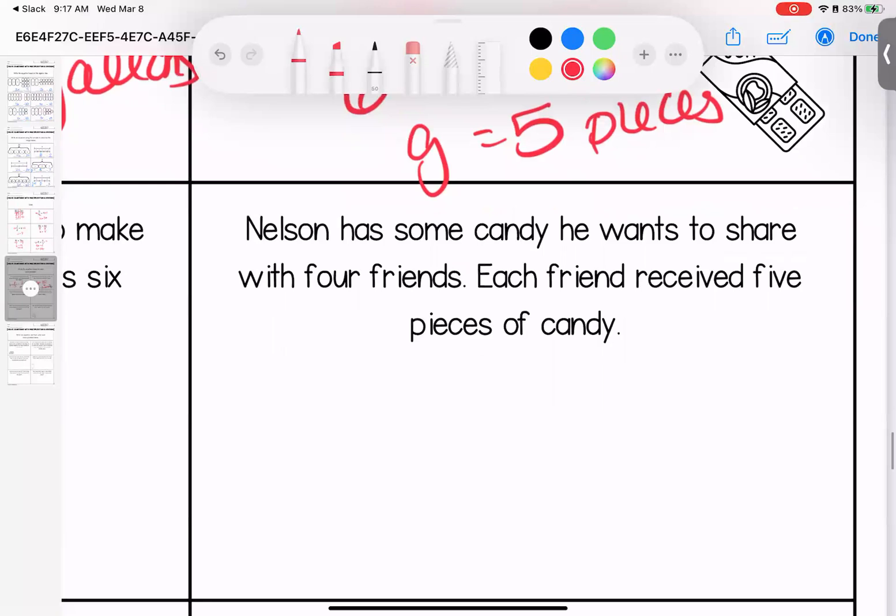Nelson has some candy he wants to share with four friends. Each friend will receive five pieces of candy. So Nelson's going to divide his candy with four friends. Each person gets five. Let's see how much candy he started with. He had 20 pieces.